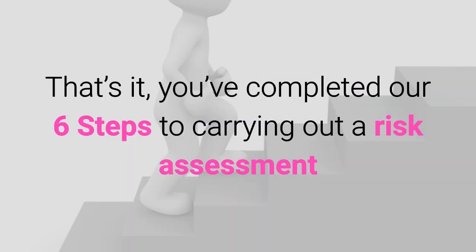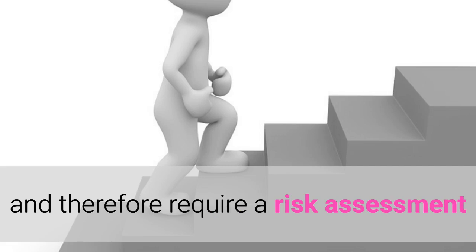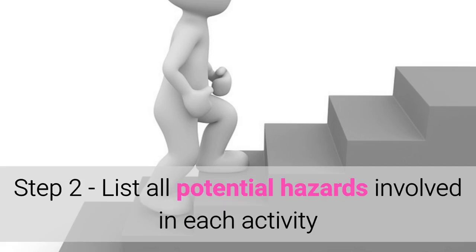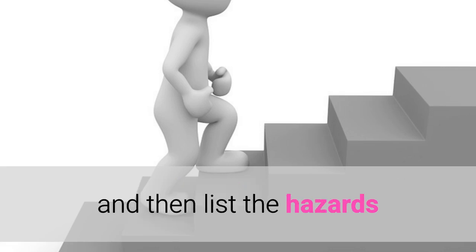You've completed our six steps to carrying out a risk assessment. Let's recap. Step one: you need to list all activities that might cause harm and therefore require a risk assessment. Step two: list all potential hazards involved in each activity. Remember to break down each activity into component tasks and then list the hazards.